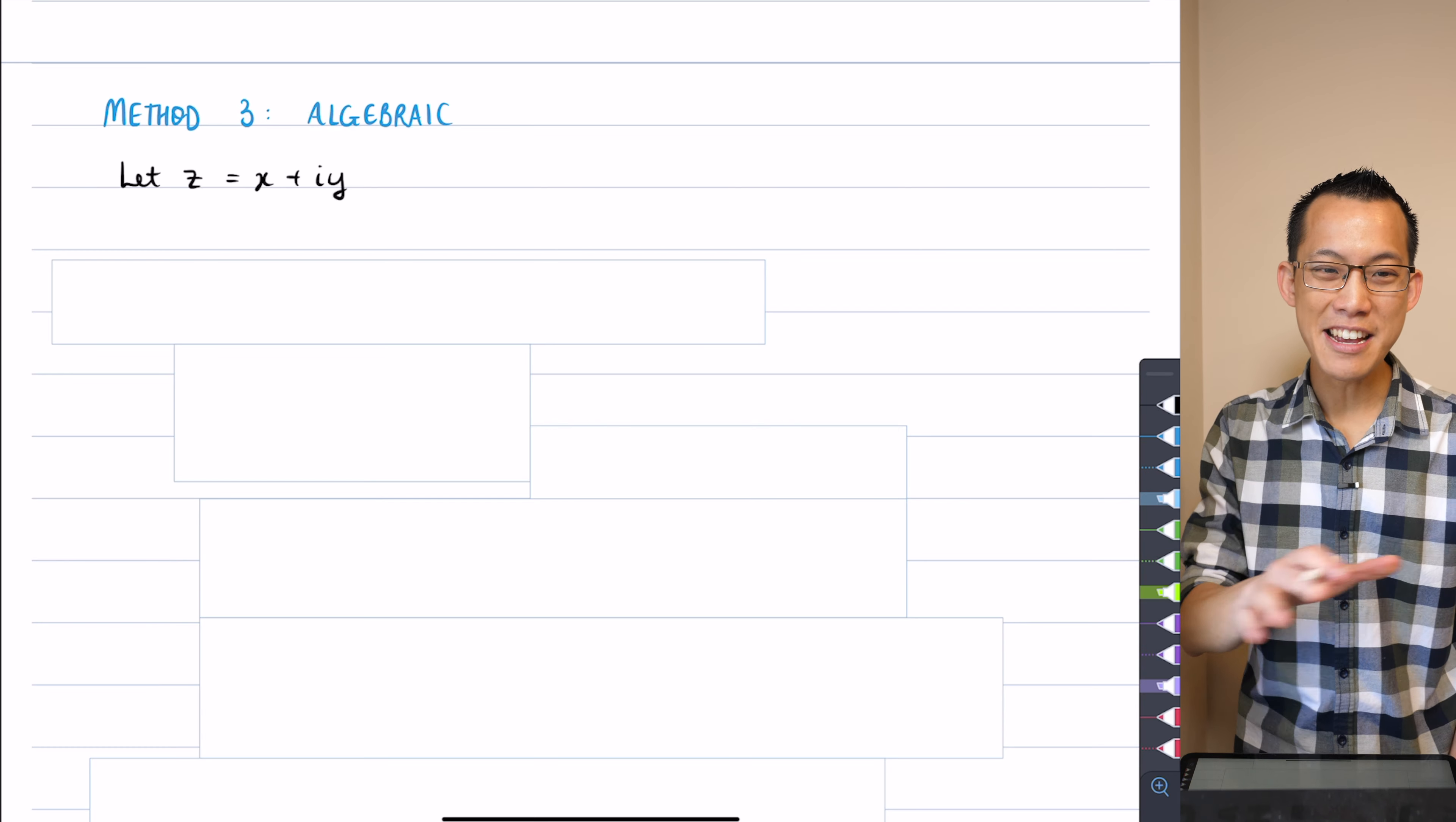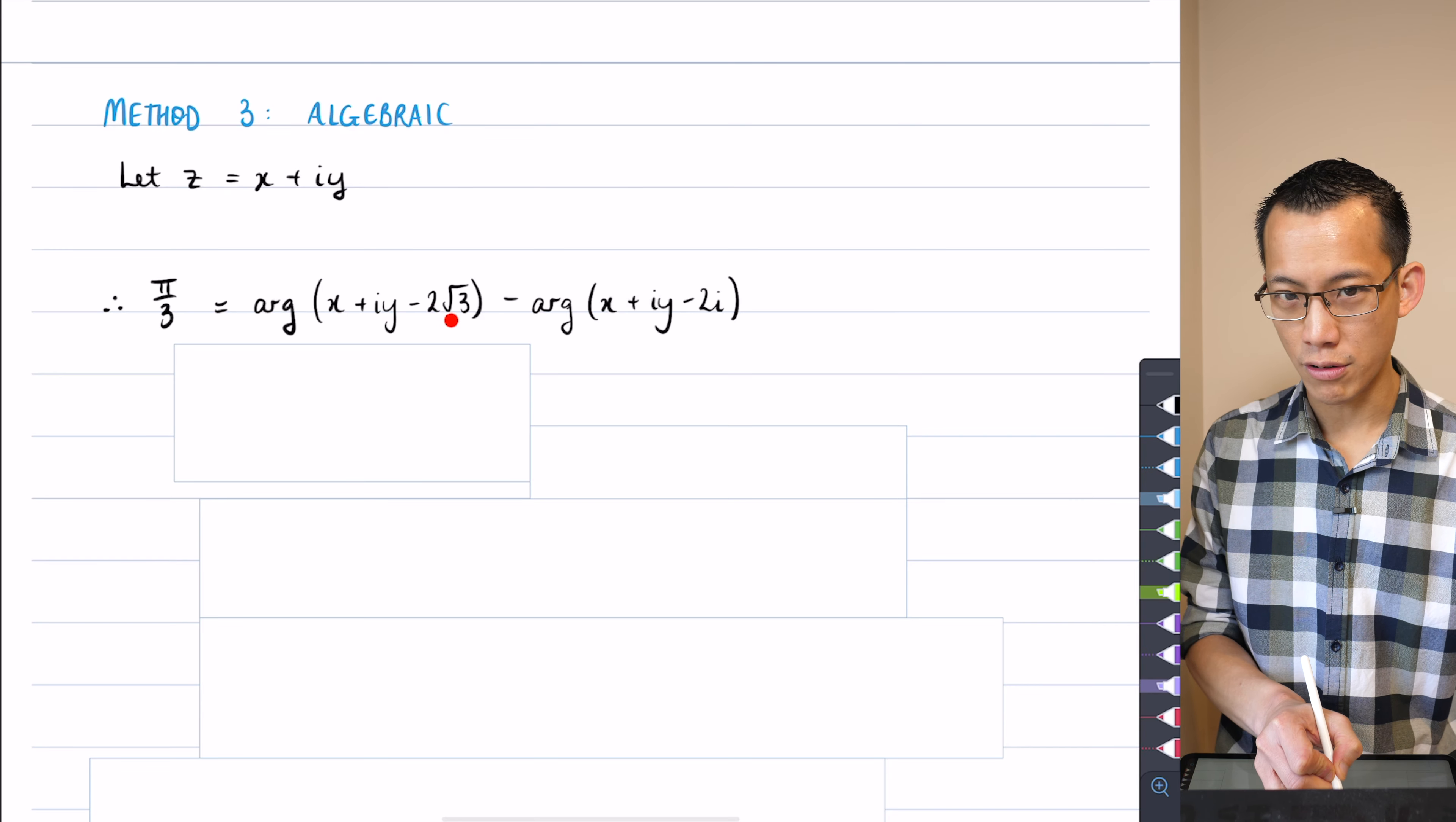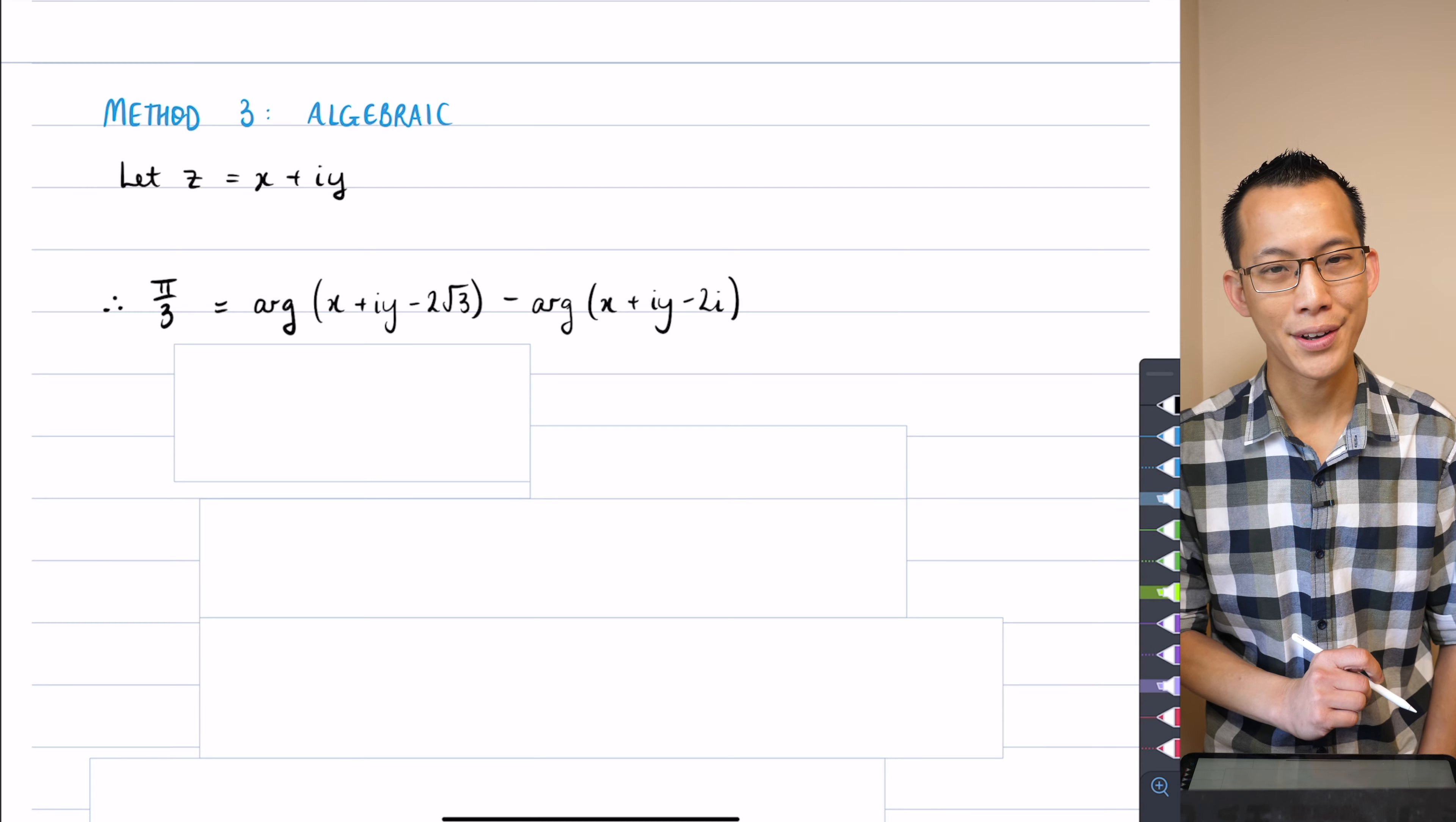Let's let Z equal X plus iY. So therefore, I'm just going to substitute that into the original equation they provided us, right? There was arg of Z minus 2 root 3, arg of Z minus 2i. And when you take the difference, that's equal to pi on 3. I've just written this on the left-hand side because I'm not going to do any manipulation to it. Everything's going to be changing over here.